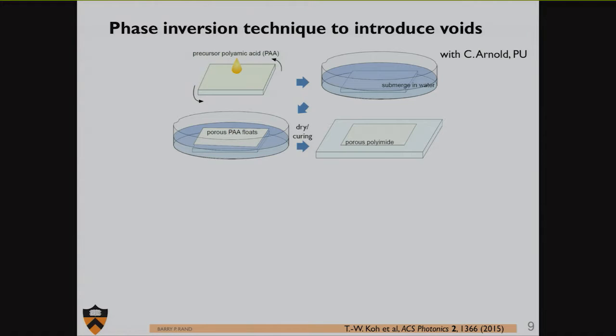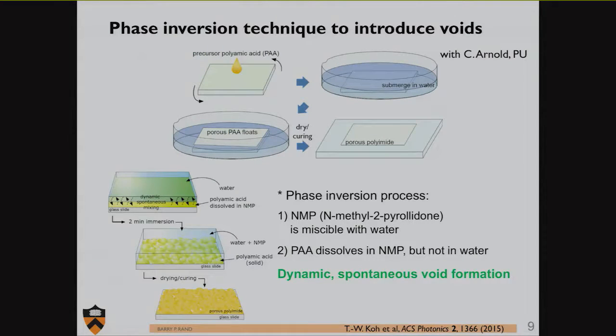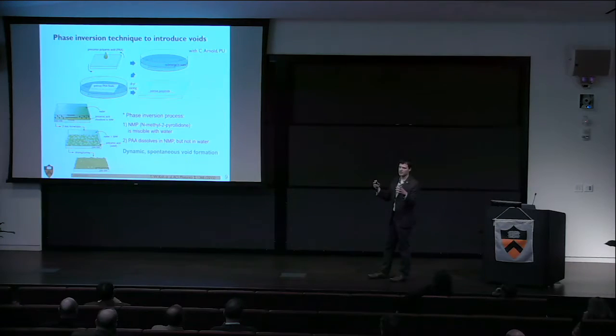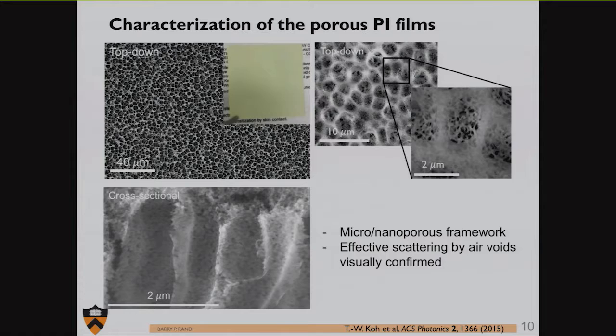How do we make this hazy layer? We worked with Professor Craig Arnold's group in mechanical engineering and PRISM. They utilized the process of phase inversion. They take this still wet polyamic acid film in its solvent, NMP. NMP has the nice property that it's miscible with water. However, water is a complete non-solvent for polyamic acid. When you take this wet polyamic acid film and submerge it in water, the NMP and water want to equilibrate. When the polyamic acid sees all this water, it wants to crash out and make this violent mixing and very porous framework. It's how a lot of filters and membranes are produced.